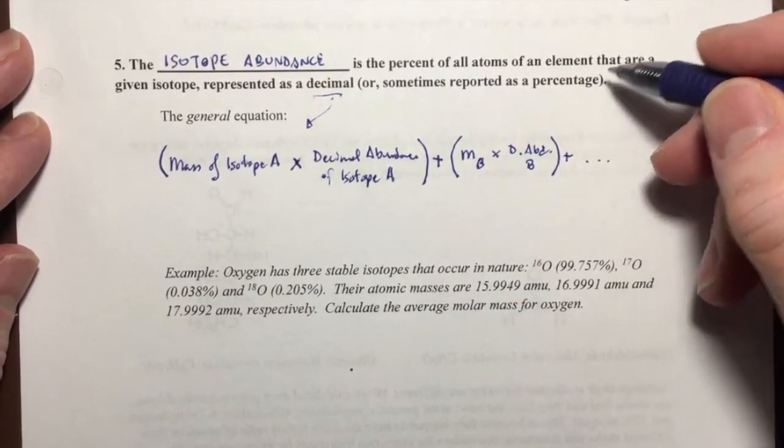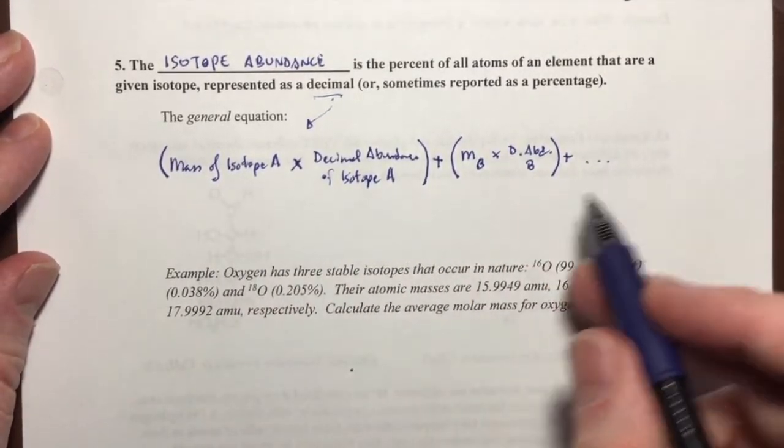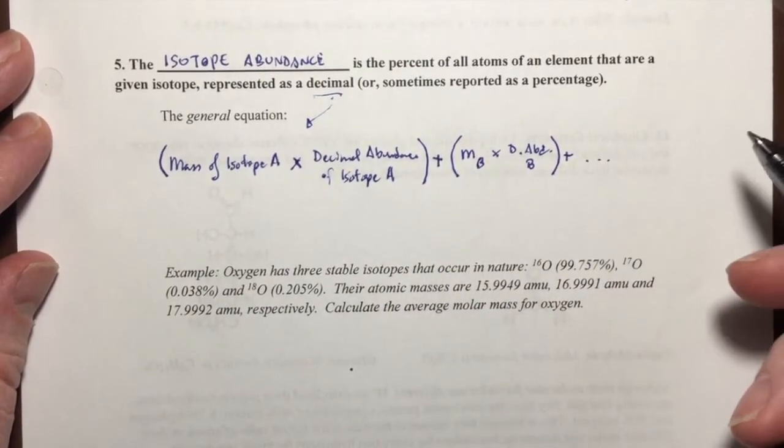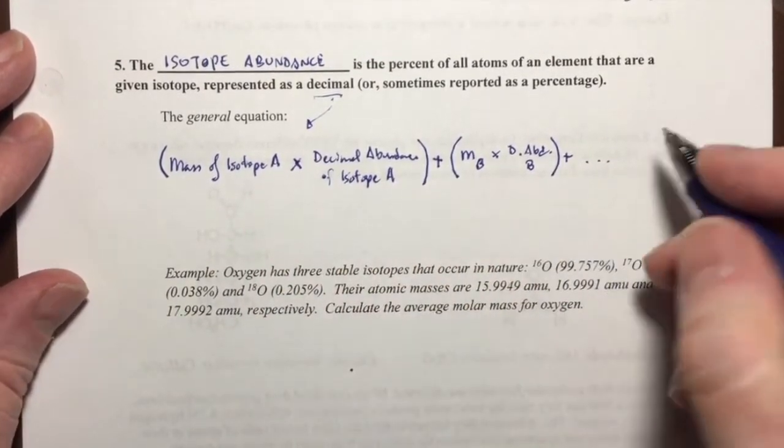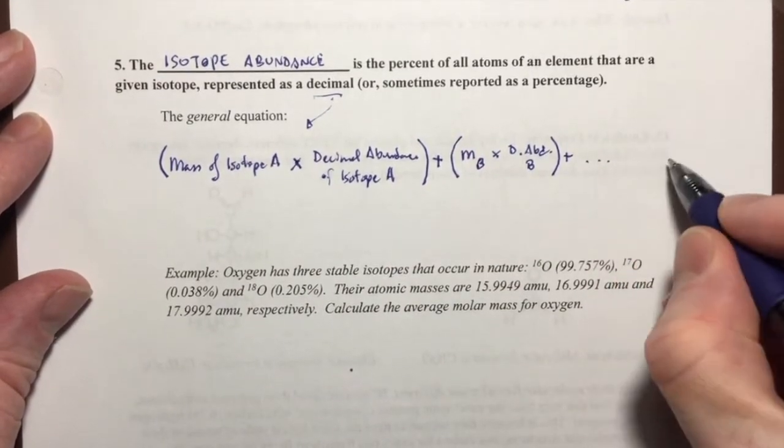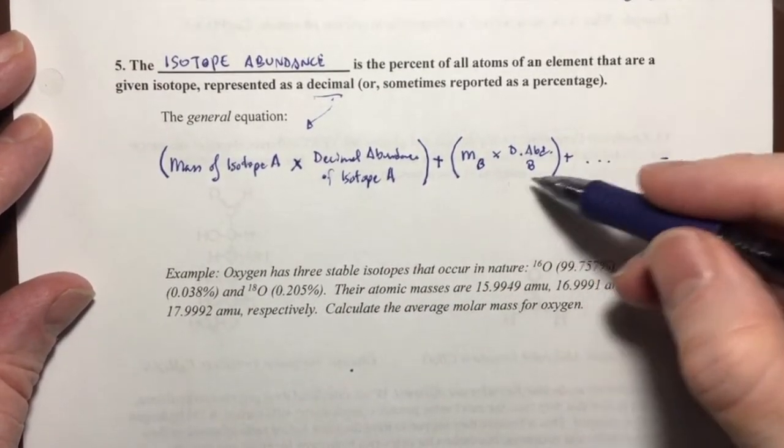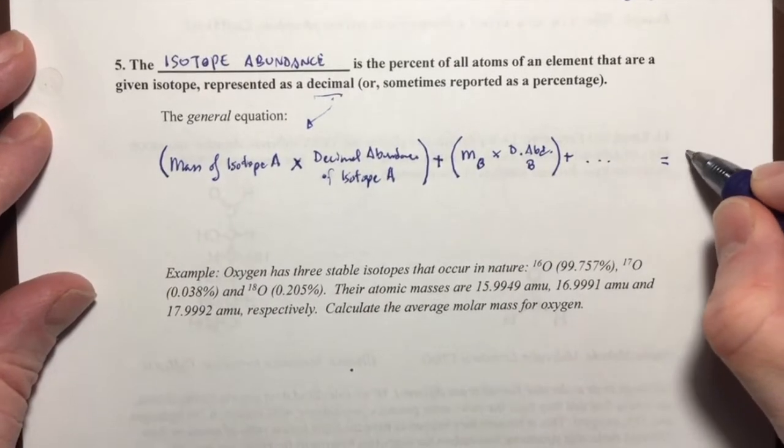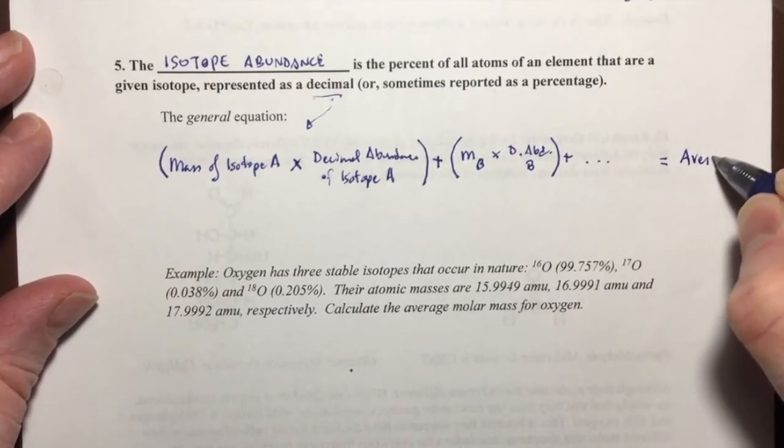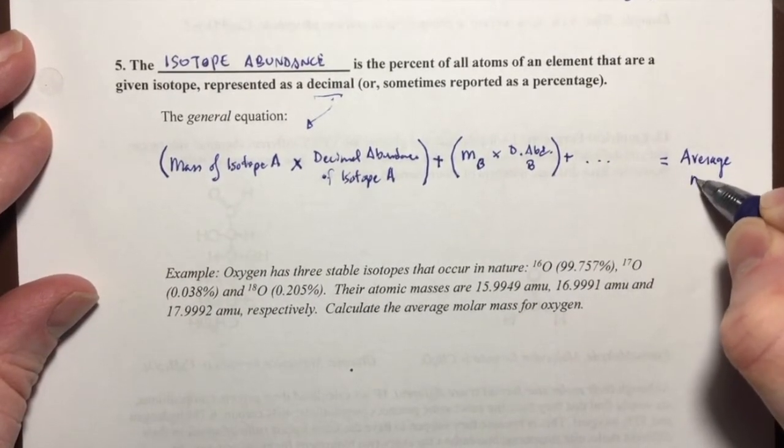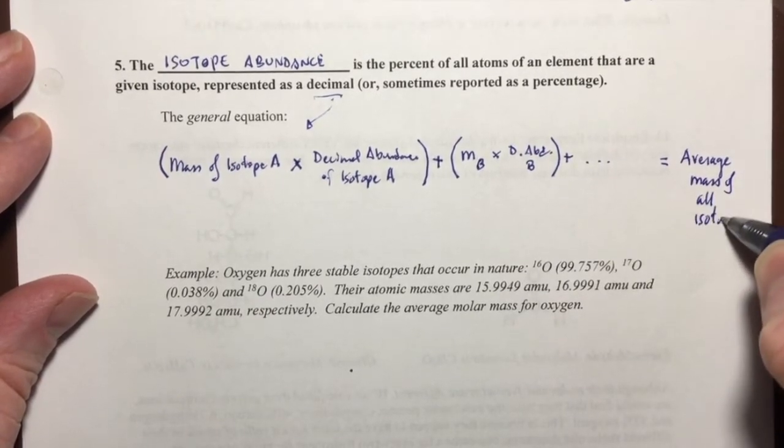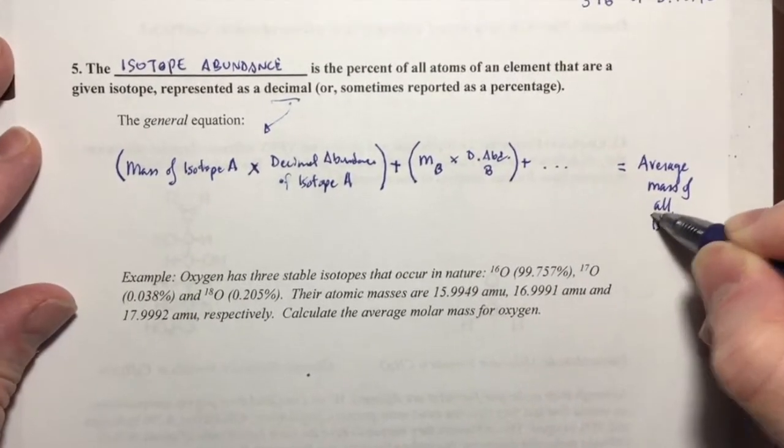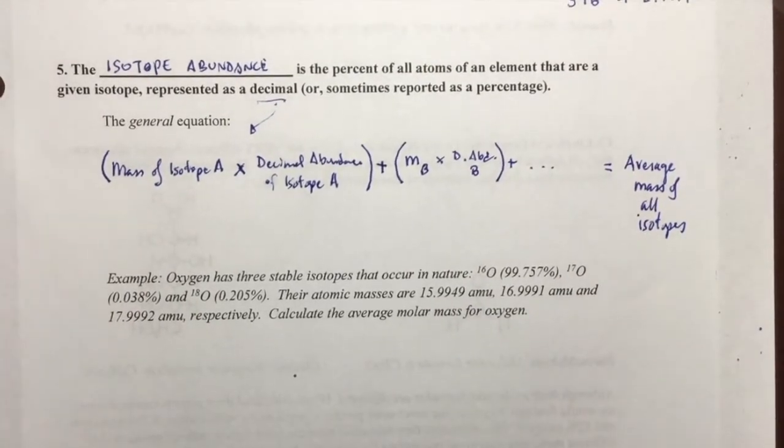If you use percentages, then all of this has to be divided by a hundred. But if you do this math, and then you do it for every isotope that you have, add them all up, then you will get the average mass of all isotopes.